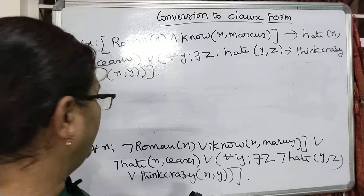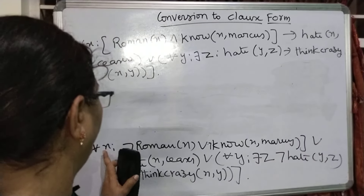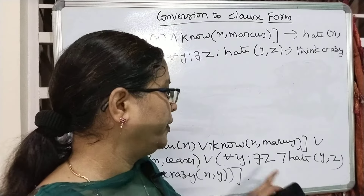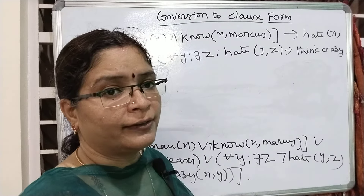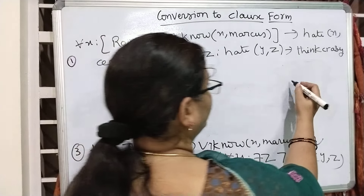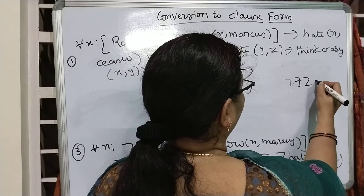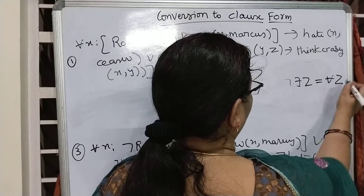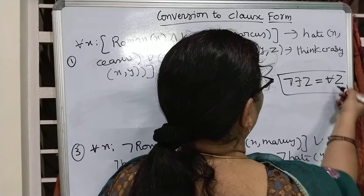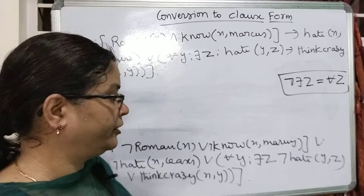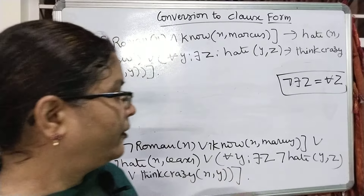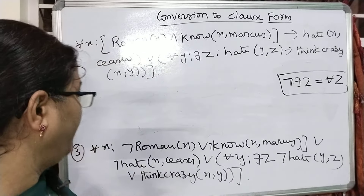We can easily drop 'for all x' and 'for all y' — universal quantifiers can be easily dropped. But 'there exists' cannot be dropped easily. For that, we have to convert: negation of 'there exists z' is equal to 'for all z'. We convert the negation of 'there exists z' into 'for all z', so the total expression will be negated and become a universal quantifier.